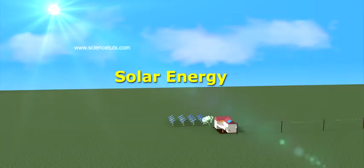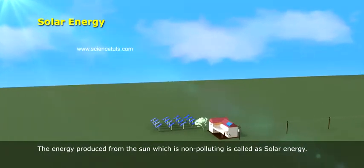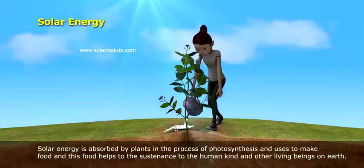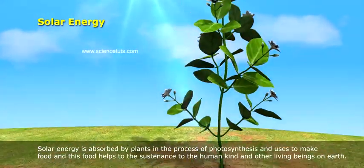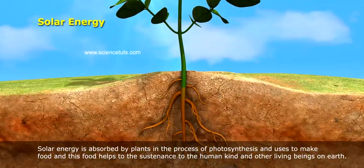Solar energy. The energy produced from the sun, which is non-polluting, is called solar energy. Solar energy is absorbed by plants in the process of photosynthesis and used to make food. This food helps sustain humankind and other living beings on Earth.